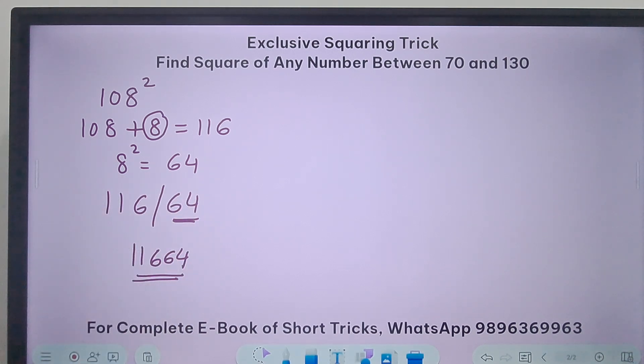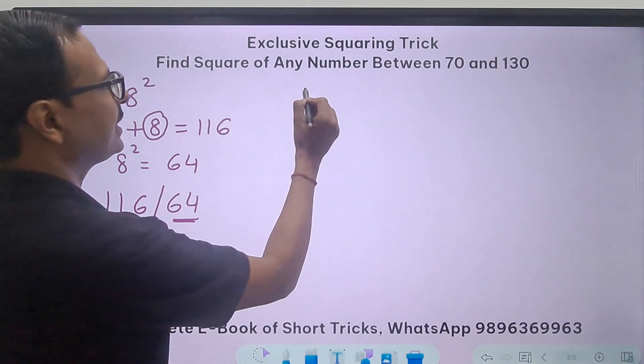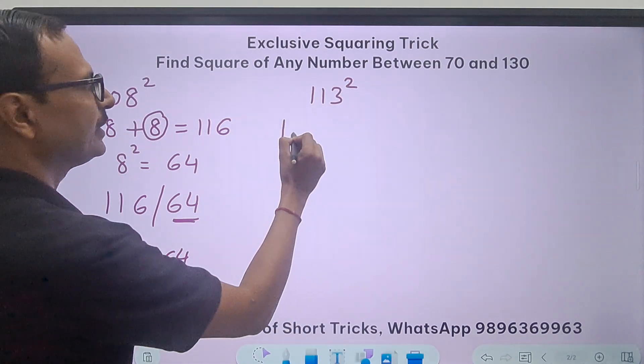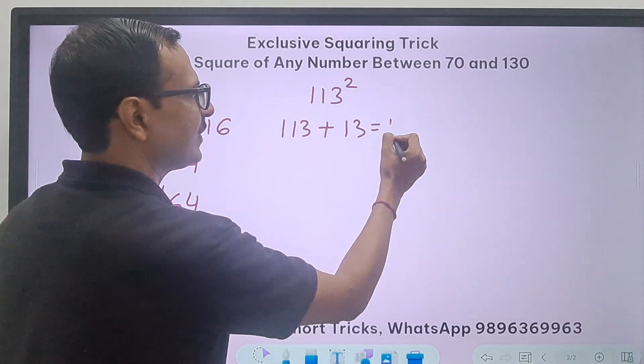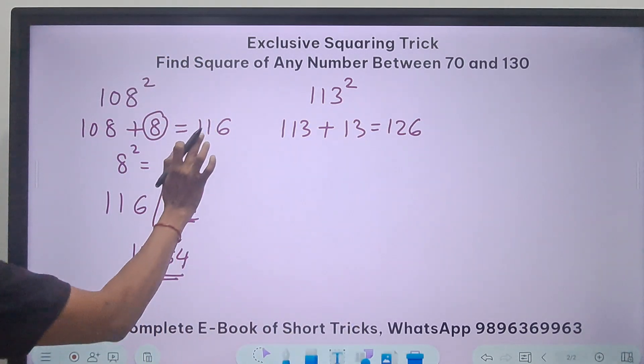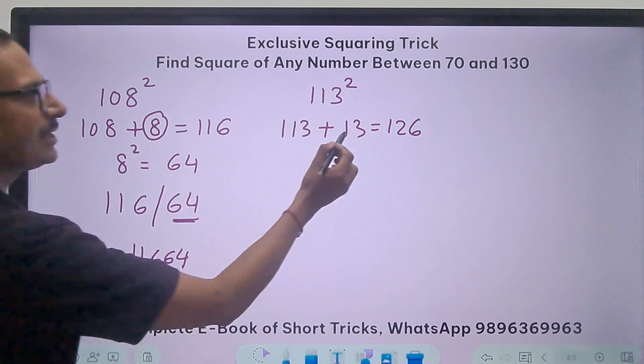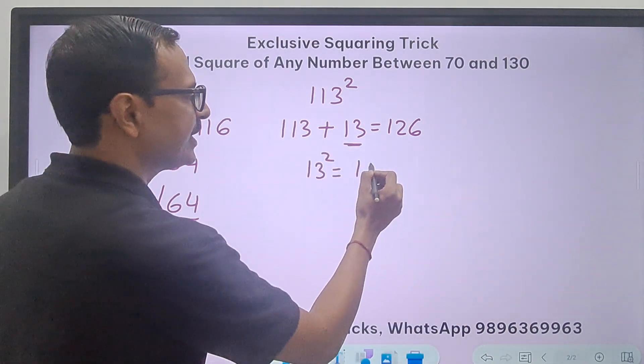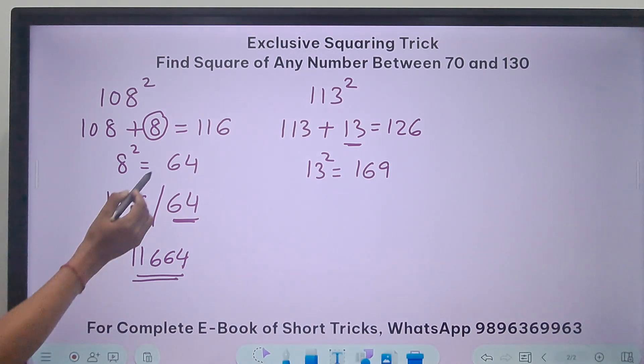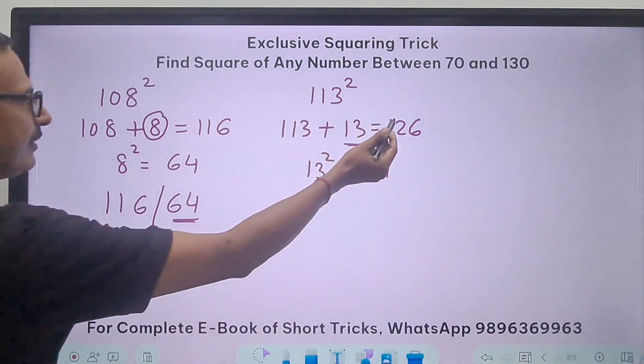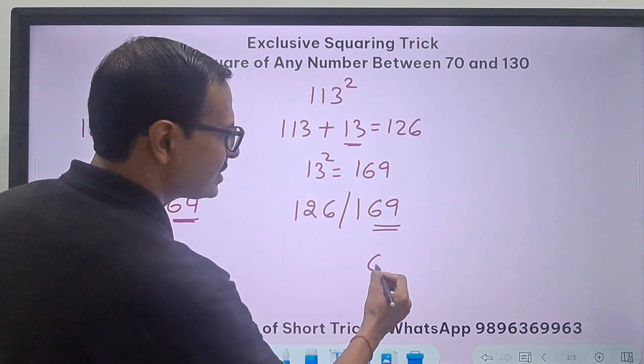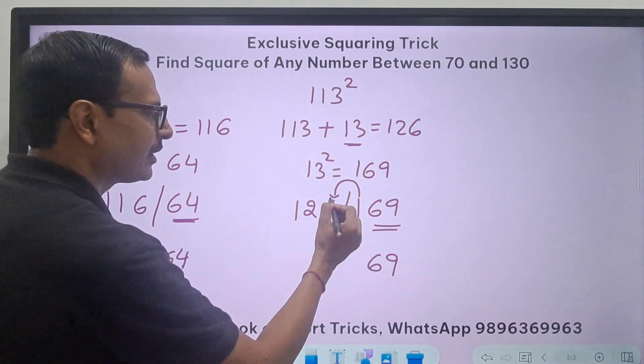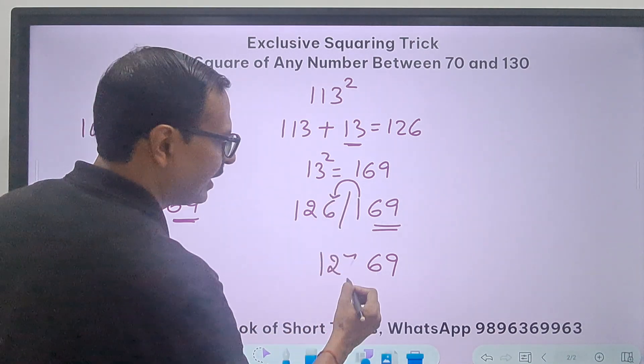Suppose we get three digits here, retain two digits and carry forward the hundreds place, okay? So let's take a question where probably we have to do some carry forward. So let's do 113 square. So I told you, the same number plus the excess over 100, this is 13. So how much is this? This is 126. Now this forms the first part, and the excess is 13, right? So 13 square we all know is 169. So now you have to write this square number later and the first number here: 126 and 169. Retain two digits, carry forward the hundreds place. So 126 becomes 127, and that gives you the square of 113.